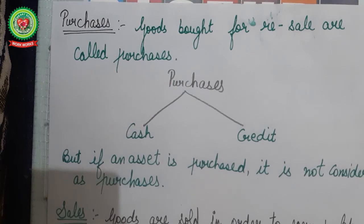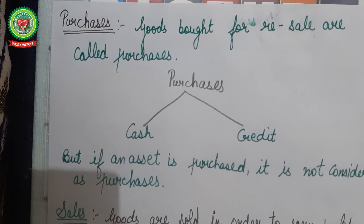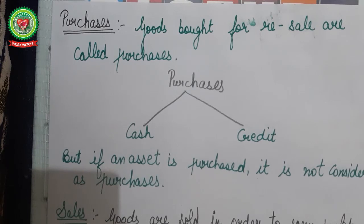The next term is purchases. Goods bought for resale are called purchases. When we purchase goods to convert them into finished goods for resale, they are called purchases, and they are of two types: cash purchase and credit purchase. For example, Rajan bought 72 pieces of wire net — that is a purchase. If he makes payment immediately, it is a cash purchase; if he promises to pay later, it is a credit purchase. If an asset is purchased — like a car or LED TV — it is not considered a purchase but is recorded as an asset.